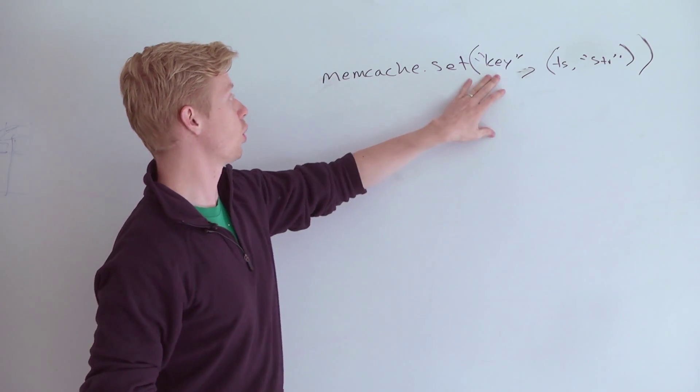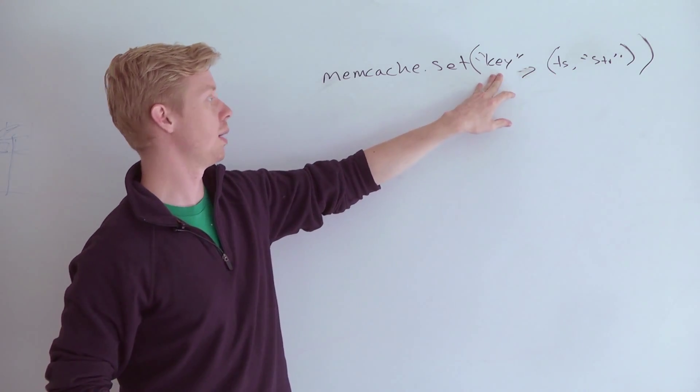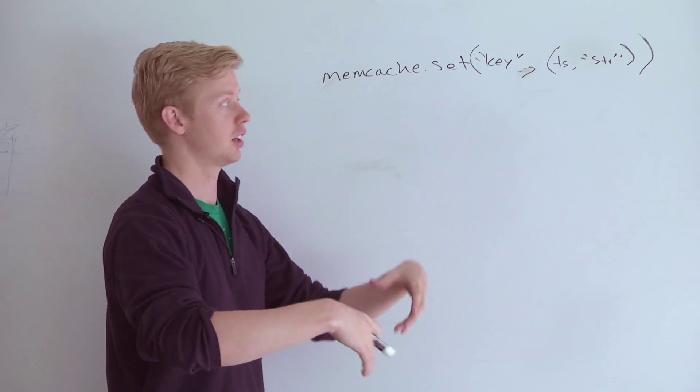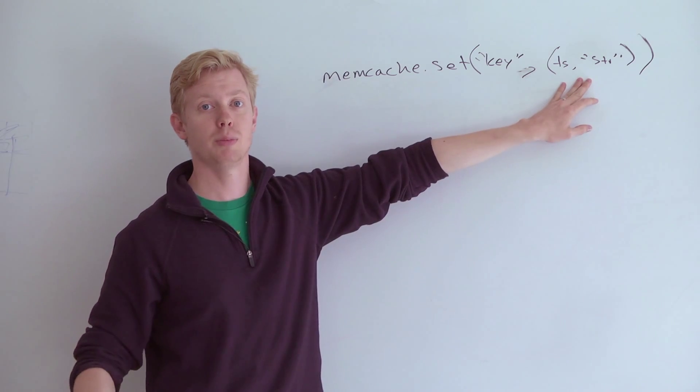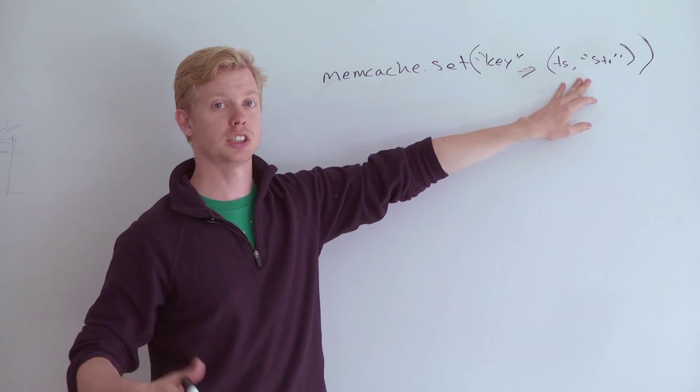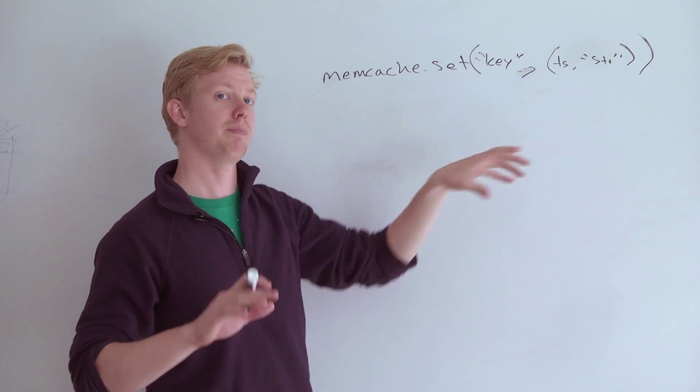When you get the value back out of Memcache, the library will convert it back into your Python data structure. As long as there's simple things in here, and by simple things I mean lists, dictionaries, primitive data types, you can get away with some objects, but they have to be picklable.